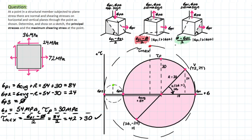What's the normal stress acting on this inclined plane? We know that normal stress equals sigma average, but we need to consider the sigma average for this new circle using sigma p1 and sigma p3. Taking those and dividing by 2: 84 plus 0 over 2, which gives us a normal stress of 42 MPa acting on that plane.